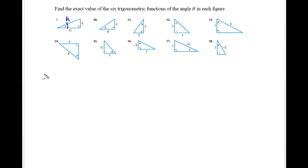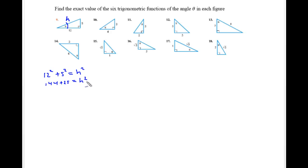We have legs x squared and y squared but are missing the hypotenuse. Using a² + b² = c²: 144 plus 25 equals h squared, so 169 equals h squared. Taking the square root of both sides and ignoring the negative, the hypotenuse equals 13.